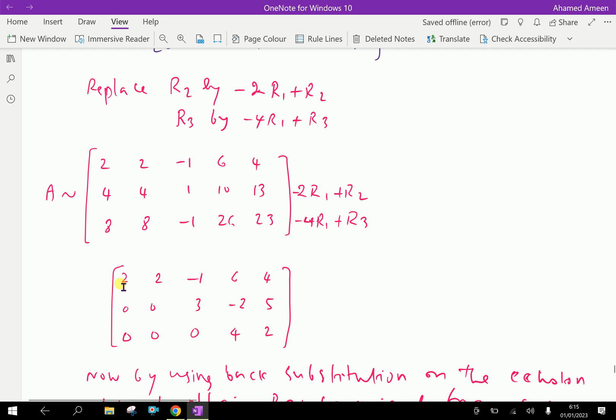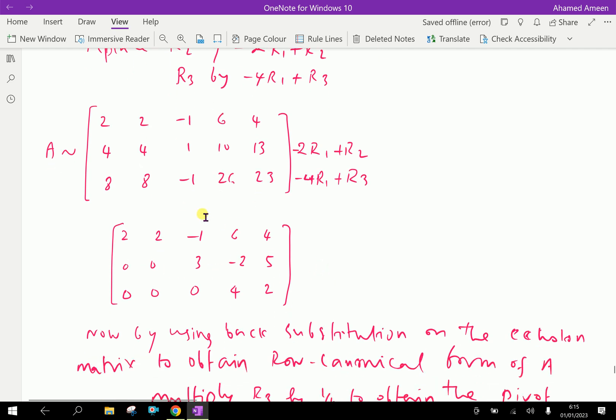First, the first row as it is written. The second row is: multiply the first row by 2 and add up with the second row, we get 0. That is, 2 into 2 is 4, minus 4 plus 4 is 0. Like this here also, 0. Look at here, minus 2 into minus 1 is 2, plus 1 is 3. The second row changes like this.